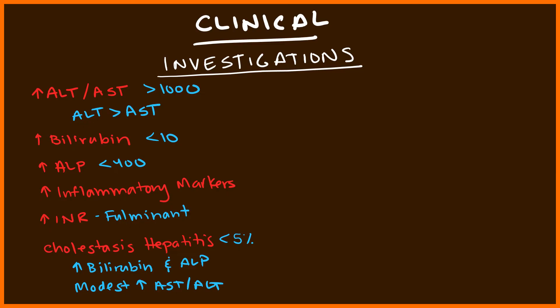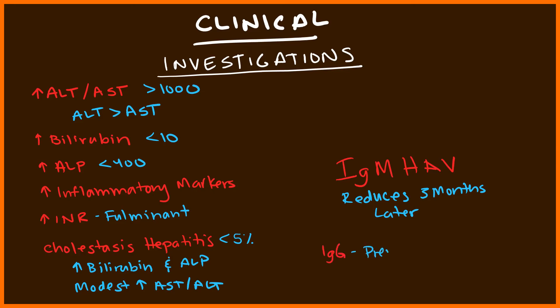The ultimate diagnostic test is an IgM antibody against Hepatitis A virus — this will diagnose Hepatitis A virus for you. It's typically going to be elevated for about three months, then you'll notice a reduction. IgG is not that helpful clinically; it's only used for prevalence studies. In the clinical setting, IgM Hepatitis A virus antibodies is your go-to test.